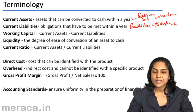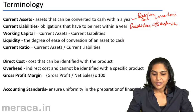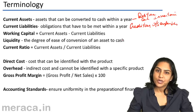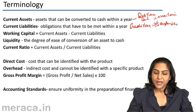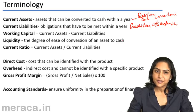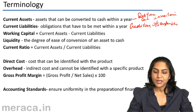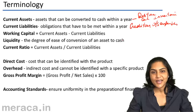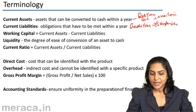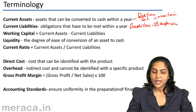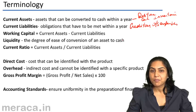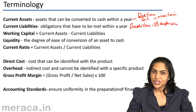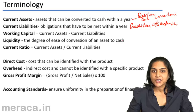Working capital is equal to current assets minus current liabilities — it is the difference between the two. Normally, a positive working capital ensures a sound financial health of the business.